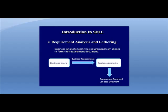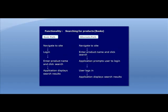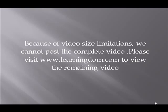Now let's try to understand basic and alternate paths better by going back to our example of the online bookstore. Let's take a scenario: the functionality is searching for products or books. Let's try to understand this.